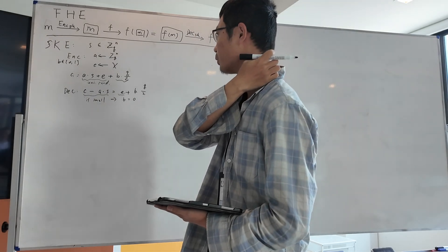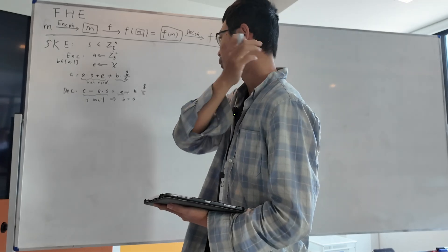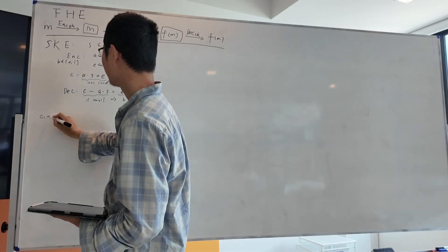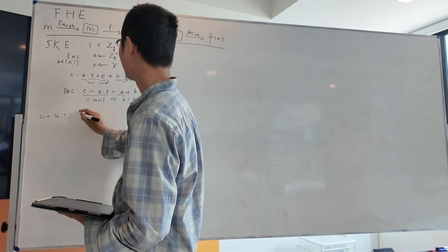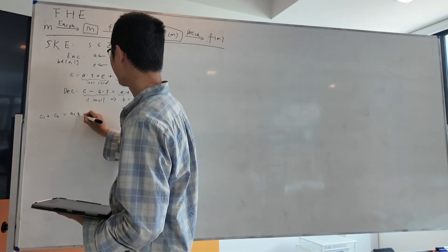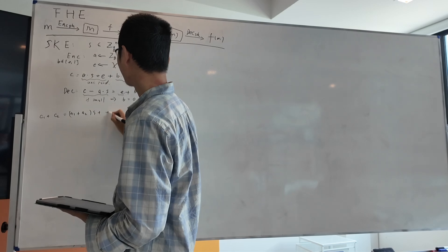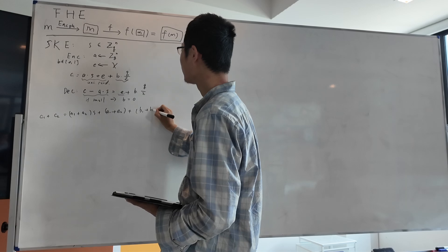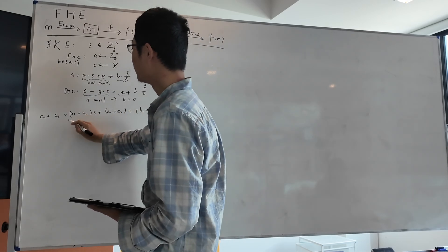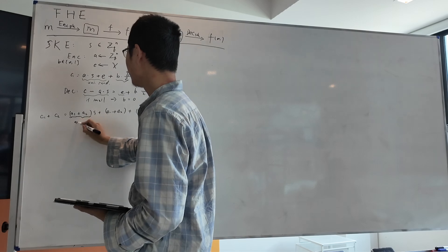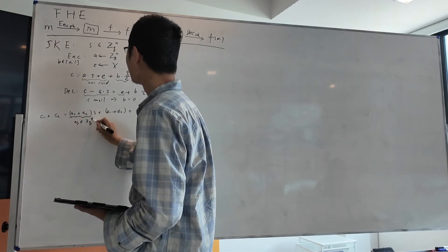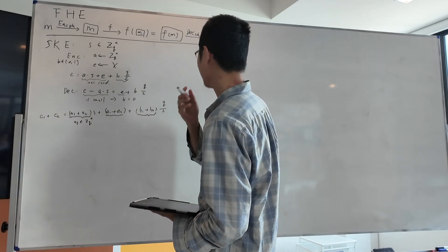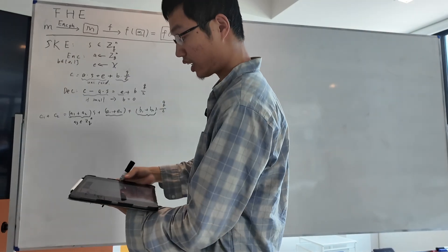This symmetric key encryption scheme is already homomorphic in a sense — it's additive homomorphic. Because if you have two ciphertexts c1 and c2 and you add them together, you get another random vector a3 and another small error vector, and the addition of your secret bits. So this is already additive homomorphic.